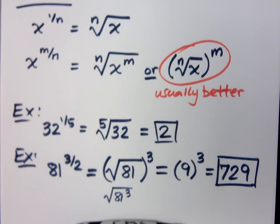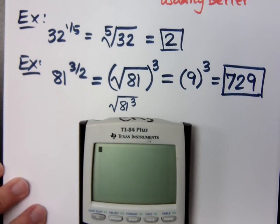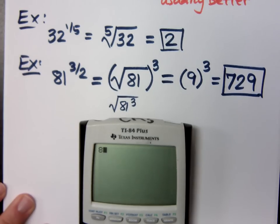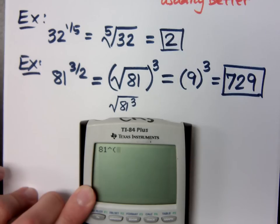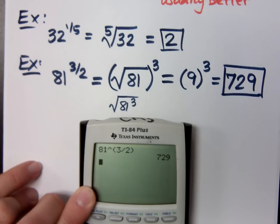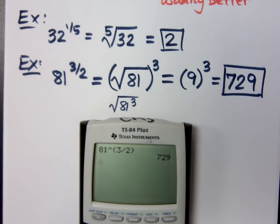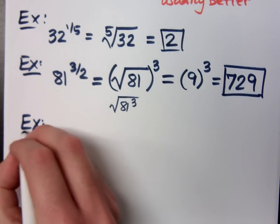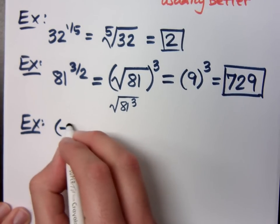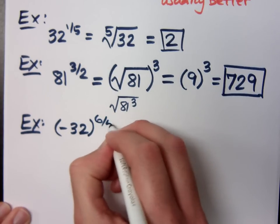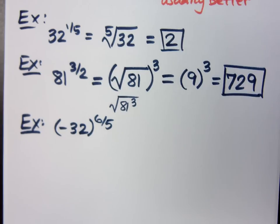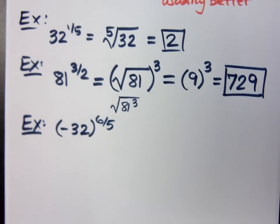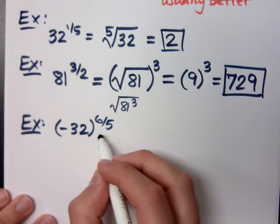Now, if you have your graphing calculator, you can also check it. So if I do 81 raised to the, make sure you do your parentheses, 3 halves power, I get 729. Verified, right? If I have negative 32 raised to the 6 fifths power. Now, even though I used the calculator, I was just checking my work. I don't want you to use the calculator to do your work. You have to be strong without it.